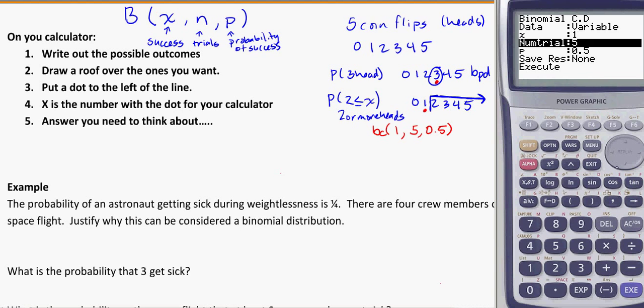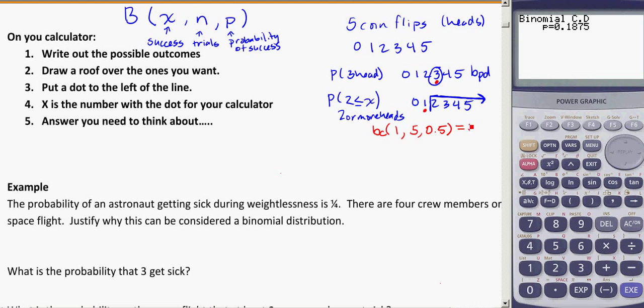And I'm going to put in one, because that's where my dot is. It's to the left of the line. Then I'm going to put in five for my number of trials. Probability is still that. So I'm going to execute. And this is going to be equal to 0.1875, which doesn't seem like a lot. And again, that is actually calculated just zero or one.